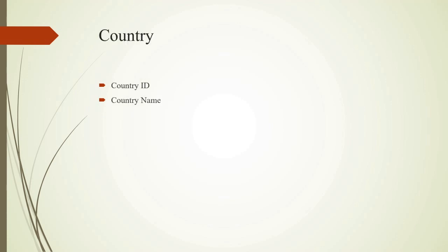Country Entity has attributes: country id and country name. Country Entity has one domain relation with League Entity because a country can have more than one league. For example, Turkcell Super League and Sport2 Super League.